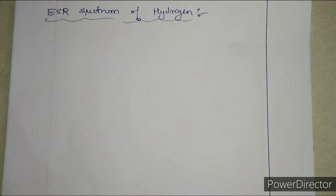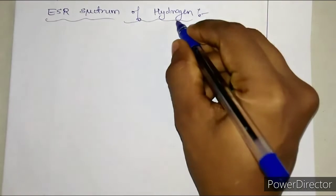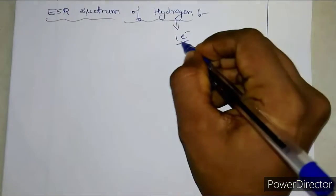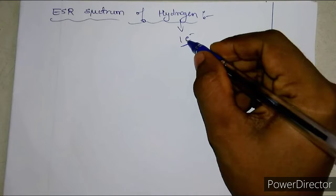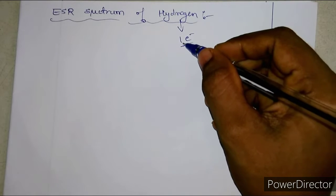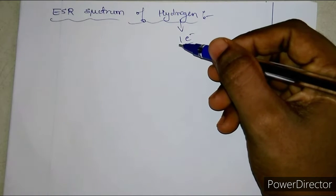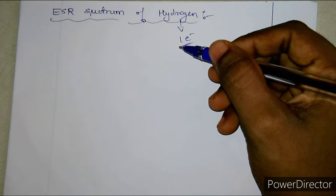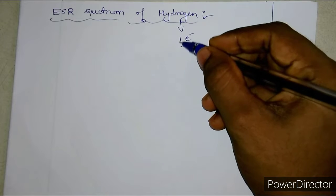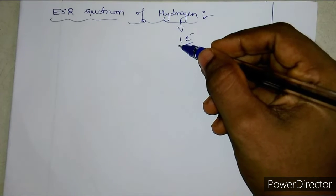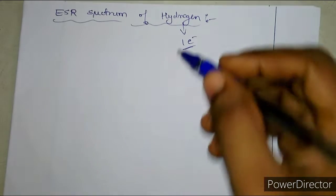Hello students, welcome to my channel. In this video, we will study about the ESR spectrum of hydrogen. Hydrogen has one electron, which means it is in an unpaired condition. Therefore, it is an ESR active species. Any species that has an unpaired electron will be an ESR active species. Hydrogen also has one unpaired electron, and hence it is an ESR active species.